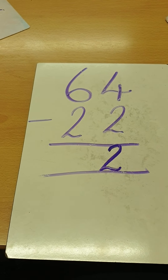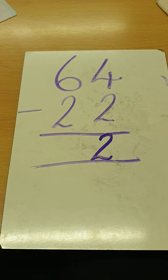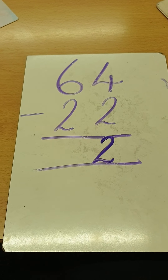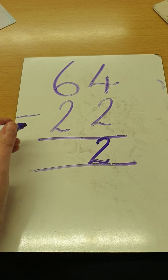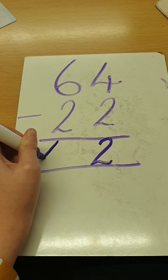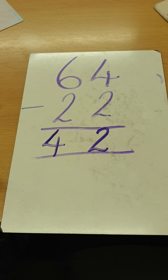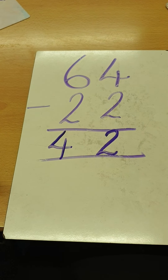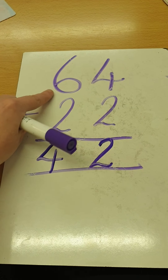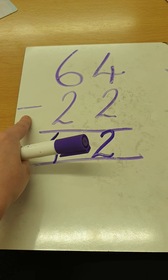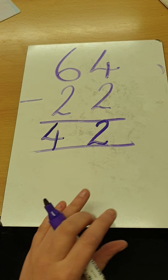Now let's have a look at our tens. I've got six tens take away two tens. Can you do that for me? Great work — it is four tens. Now we don't say four tens and two ones — what number is this? Brilliant, it is 42. So we've learned that 64 subtract 22 equals 42. Well done.